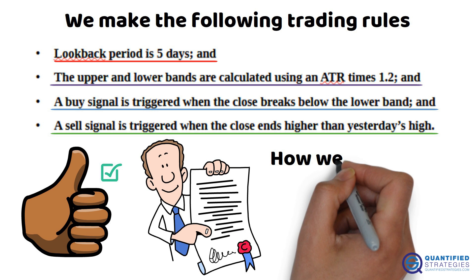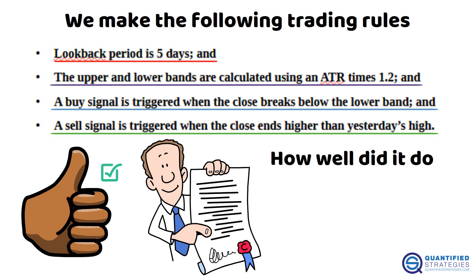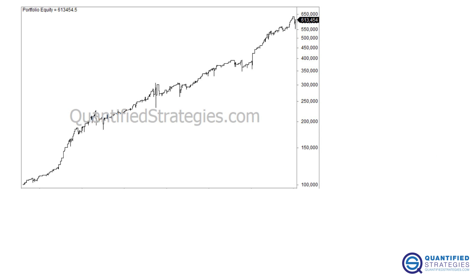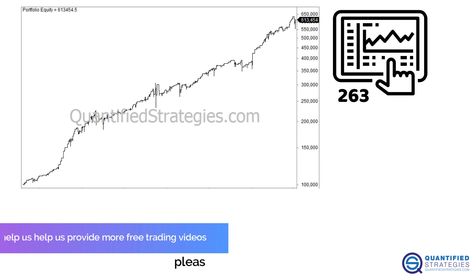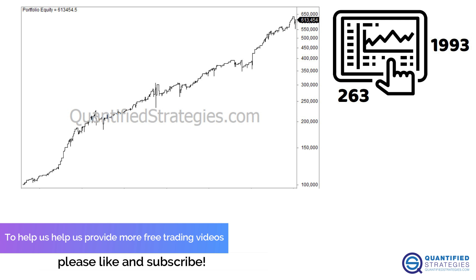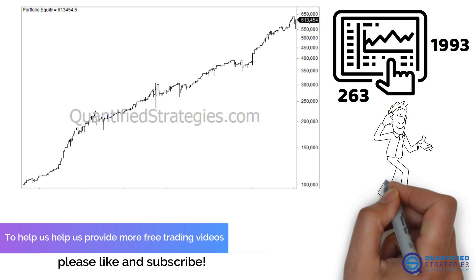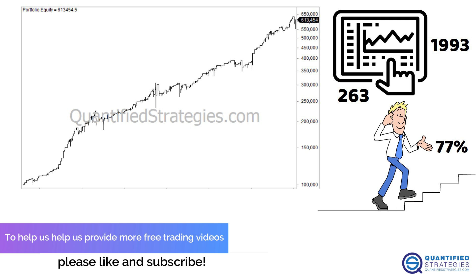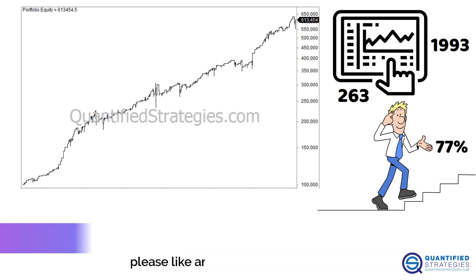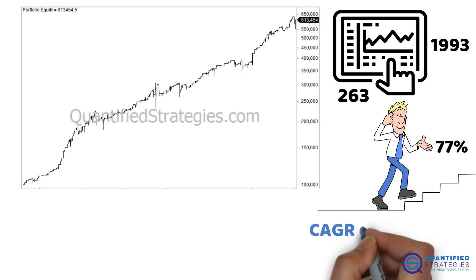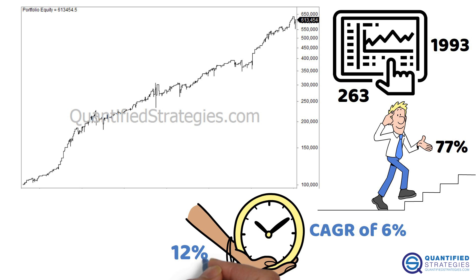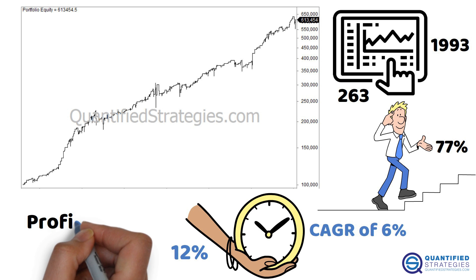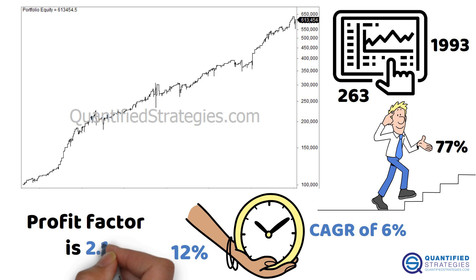So how well did it do? There are 263 trades since 1993, a win ratio of 77%, a compound annual growth rate of 6%, the time spent in the market is 12%, and the profit factor is 2.1.